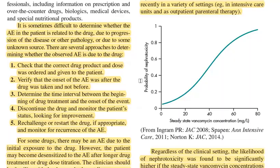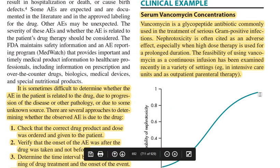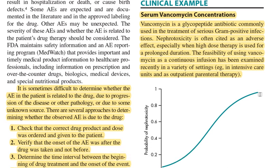The next example is vancomycin. Vancomycin is a glycopeptide antibiotic commonly used in the treatment of serious gram-positive infections. Importantly, vancomycin is not a first-line antibiotic — it is the last line of antibiotic treatment — because its toxicity potential is very high. It causes nephrotoxicity and also red man syndrome, where histamine is released causing the body to turn reddish.